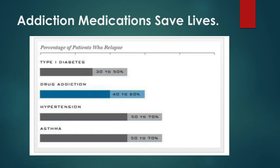Speaking of relapse and cycles of recurrence, this JAMA article shows rates of relapse or recurrence in other chronic diseases: type 1 diabetes sees relapse in 30 to 50% of people; hypertension and asthma, 50 to 70%. With substance use disorders it's somewhere in between. It presents very similarly to so many other chronic diseases — it's just as treatable — but we have social narratives that tell us otherwise.